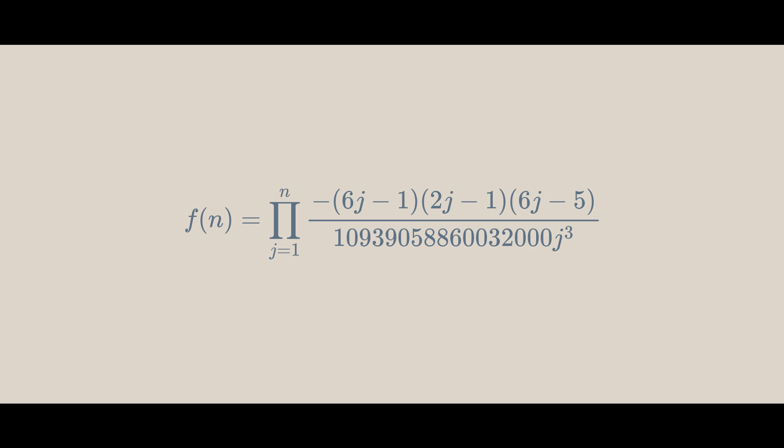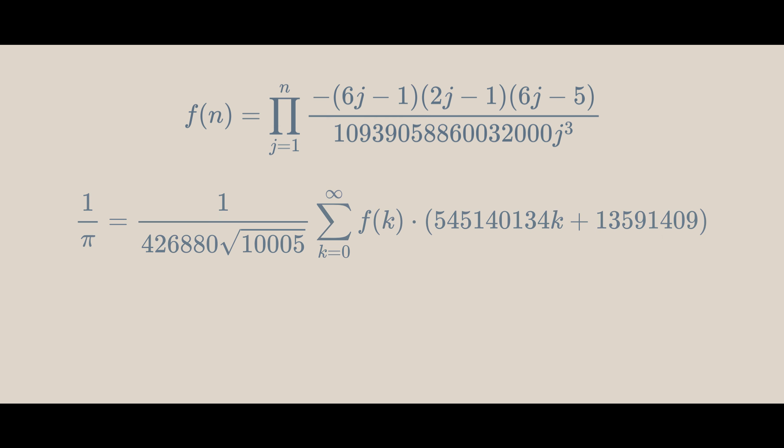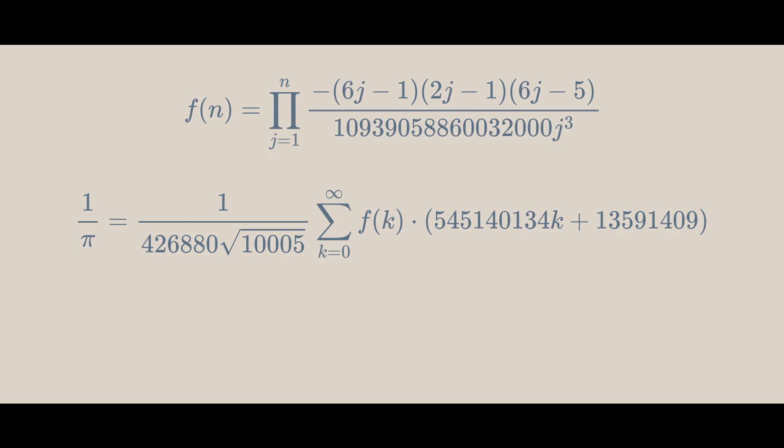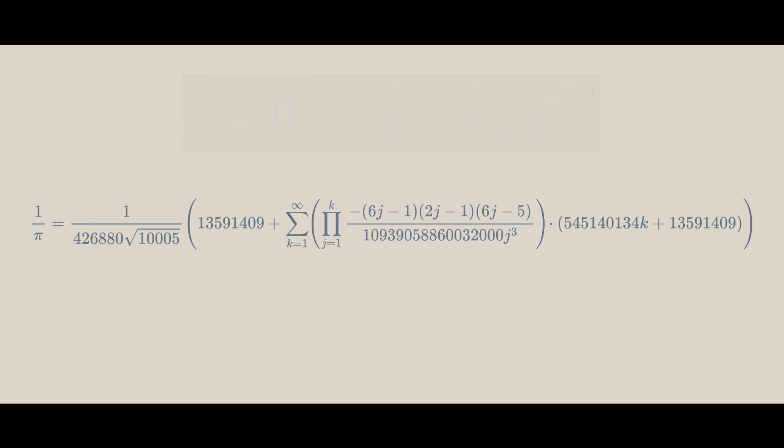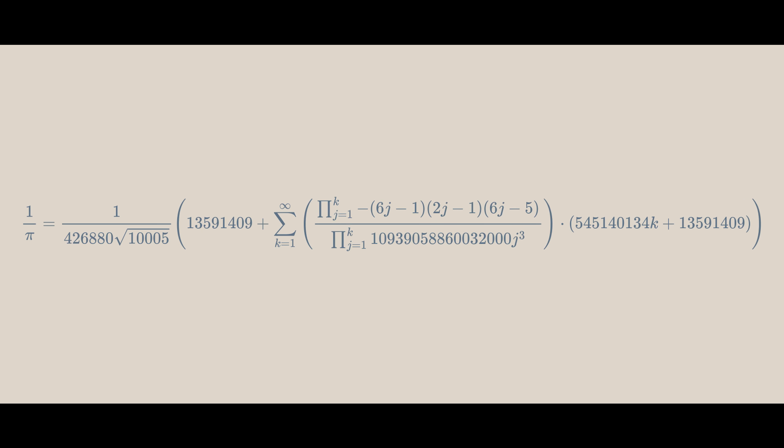In general, we see that f(n) is the product from j equals 1 up to n of g(j), which is this. This definition of f is only defined for n greater than 0, because you can't evaluate this at j equals 0. Let's go back to this. Because this new definition of f isn't defined at 0, let's compute the first term of the sum and add it up. Now that k is always greater than 0, we can use this definition of f.